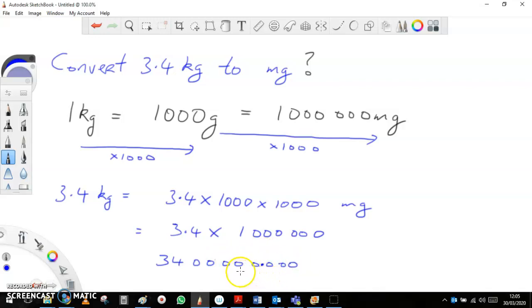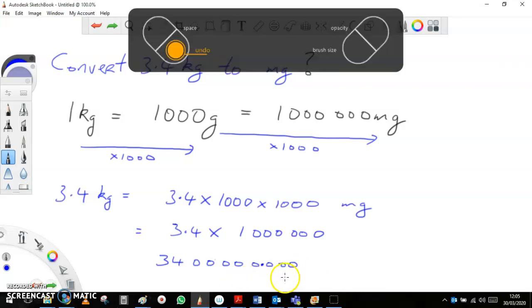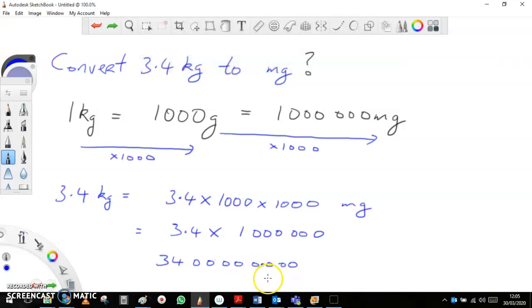So, tidying up that answer, that becomes, we've got a comma there, if you like, and a comma there. So, it's 3,400,000 milligrams. 3.4 kilograms is the same as 3,400,000 milligrams.